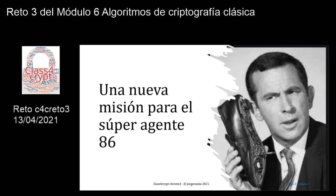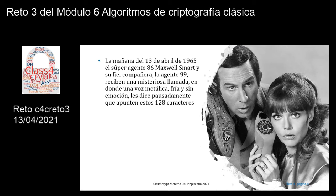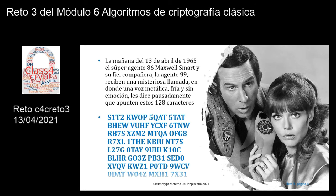Una nueva misión para el superagente 86. Aquella mañana del 13 de abril de 1965, el superagente 86 Maxwell Smart y su fiel compañera, la agente 99, que a la fecha aún no conocemos su nombre, reciben una misteriosa llamada en donde una voz metálica, fría y sin emoción, les dice pausadamente que apunten estos 128 caracteres. Y eso hacen nuestros agentes, apuntando el criptograma que comienza por S1T2 y termina por 7X31.